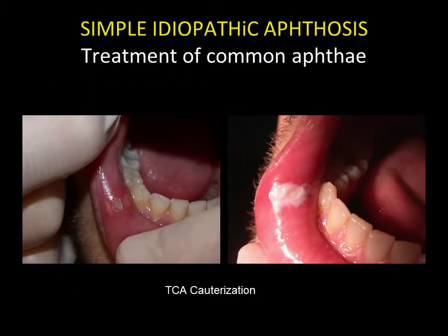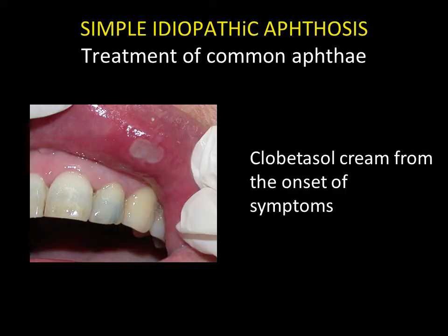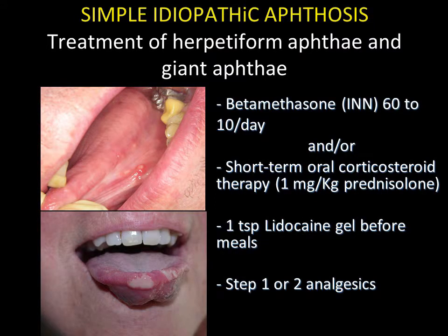Treatment of simple idiopathic aphthosis may be based on a cauterising agent, such as trichloroacetic acid (TCA). Clobetasol cream can also be used on common aphthae, facilitating rapid healing with an analgesic effect. Treatment of herpetiform aphthae is based on local corticosteroid therapy with betamethasone or lidocaine gel. Step 1 and 2 analgesics may also be recommended. Treatment of giant aphthae may be based on local corticosteroid therapy, but short-term oral corticosteroid therapy may also be suggested.